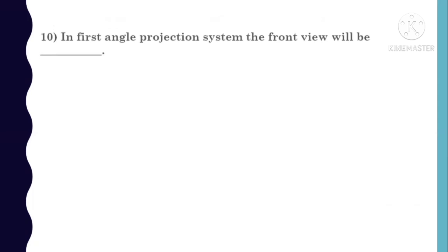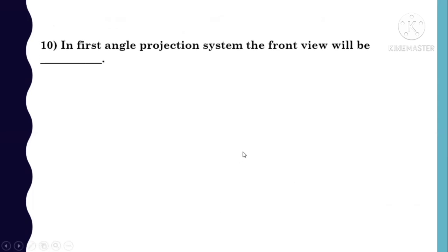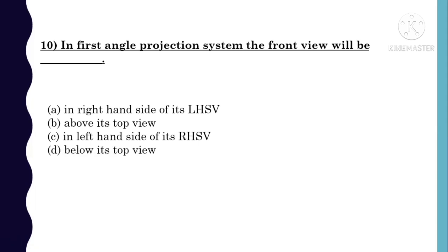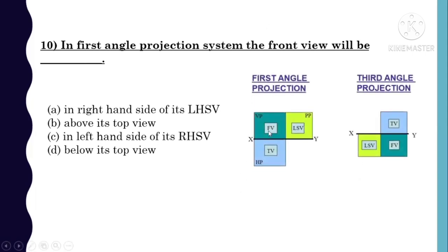Last MCQ: In first angle projection system, the front view will be — options: A) in right-hand side of LHSV, above top view; B) in left-hand side of RHSV, below top view. In first angle projection, the front view is above the top view. In third angle it would be reversed — below. So for first angle, option B, above top view, is correct.